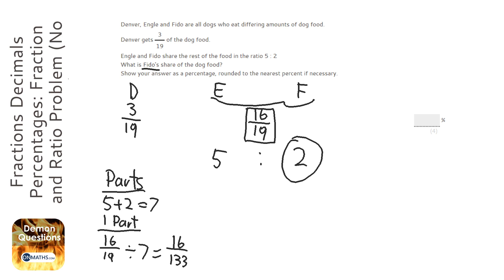Now, Fido gets 2 lots of that. So looking for Fido, he gets 2 lots of that fraction. So I'm going to times that by 2 on the calculator, which is 32 over 133.